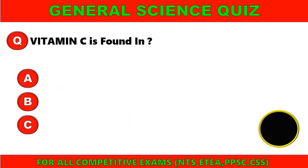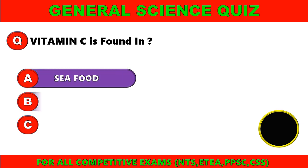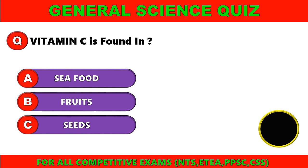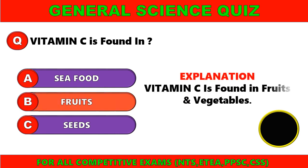Vitamin C is found in: A. Seafood, B. Fruits, C. Seeds. The right option is B. Fruits. Vitamin C is found in fruits and vegetables.